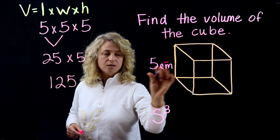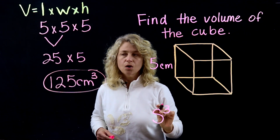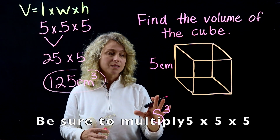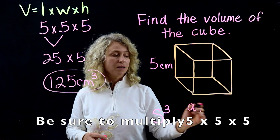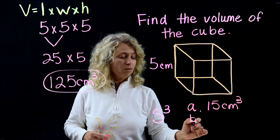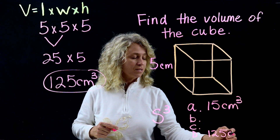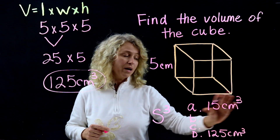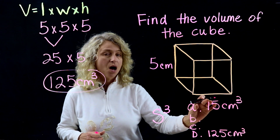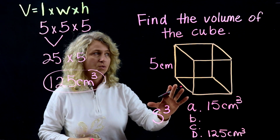The answer is 125 centimeters cubed. A common error on a multiple-choice test: choice A might be 15 centimeters cubed, which could trick your eye because you might think 3 times 5. But no — you're multiplying 5 times 5 times 5. That's how you calculate the volume of a cube.